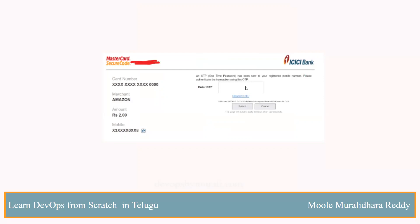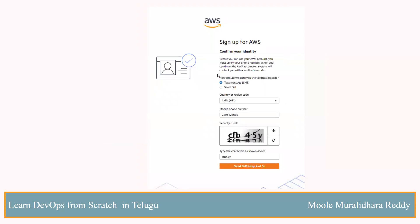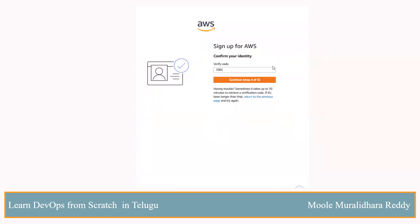Then submit and proceed to the next page. You can verify your mobile number by clicking send SMS. You will get an OTP. Enter that OTP in the verification field, then click continue to proceed.